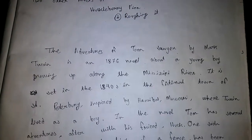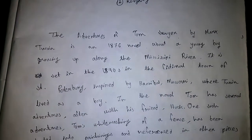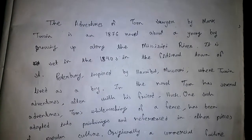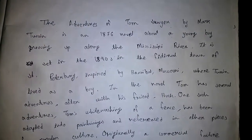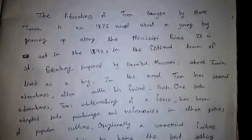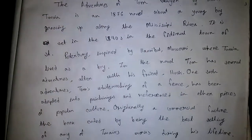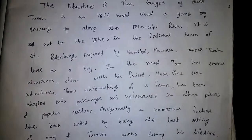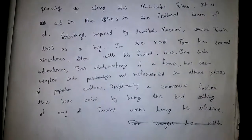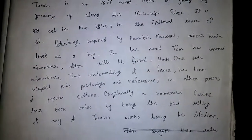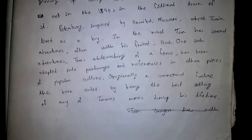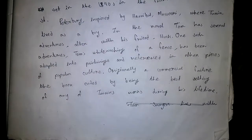The Adventures of Tom Sawyer by Mark Twain is an 1876 novel about a young boy growing up along the Mississippi River. It is set in the 1840s in the fictional town of St. Petersburg, inspired by Hannibal, Missouri, where Twain lived as a boy. In the novel, Tom has several adventures with his friend Huck.